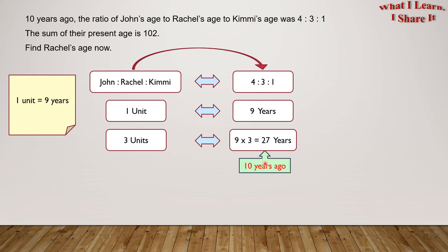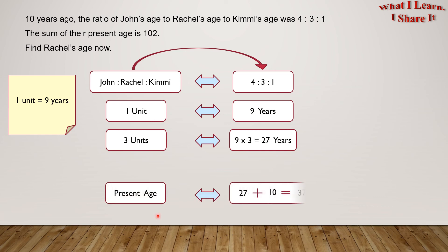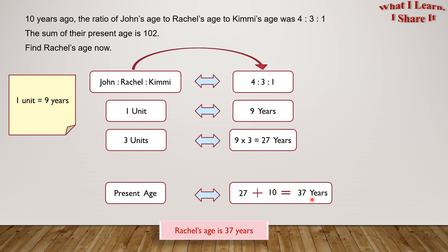But this was Rachel's age 10 years ago. So her present age would be 10 years more, and that would be 27 plus 10 equals 37 years. So Rachel's age is 37 years!